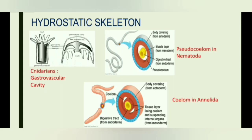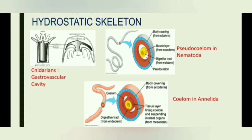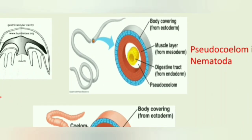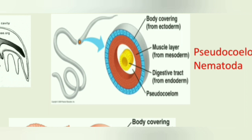First of all, we have the hydrostatic skeleton. The hydrostatic skeleton is a fluid-filled body cavity which is enclosed by the body wall. You can observe the pseudocoelom which acts as the hydrostatic skeleton in Nematoda. This white color space is the body cavity, filled with fluid and enclosed by the body wall. You can observe muscle layers enclosed in this body cavity.